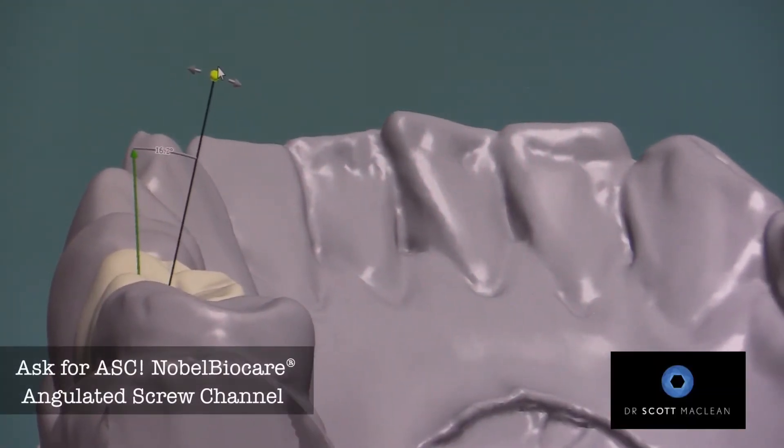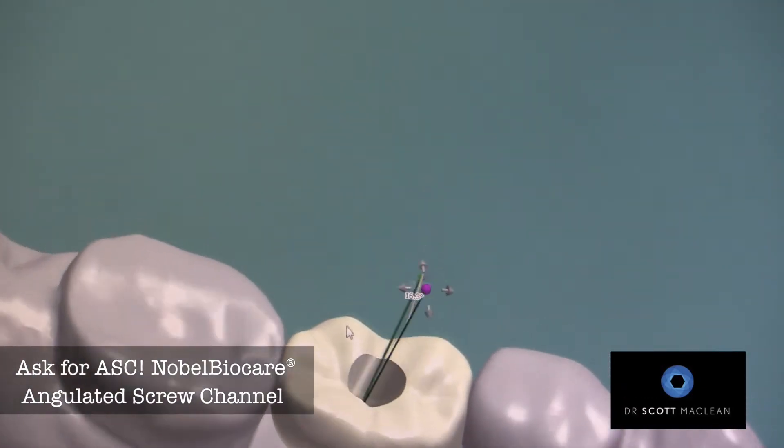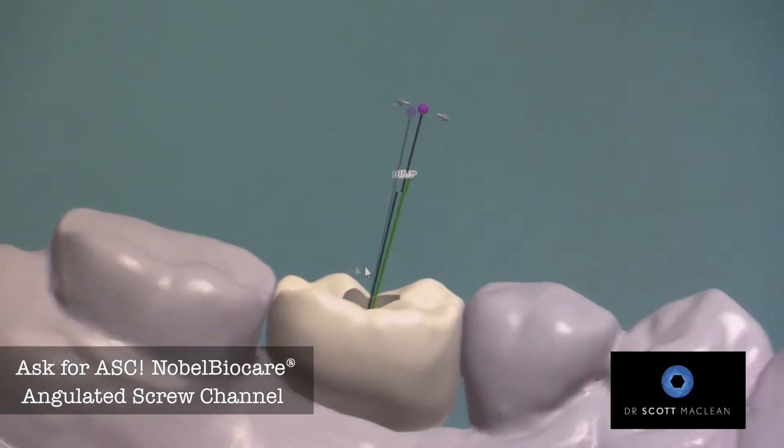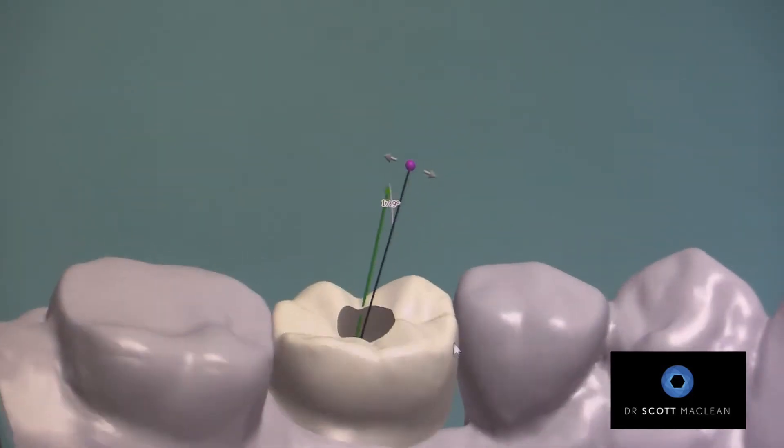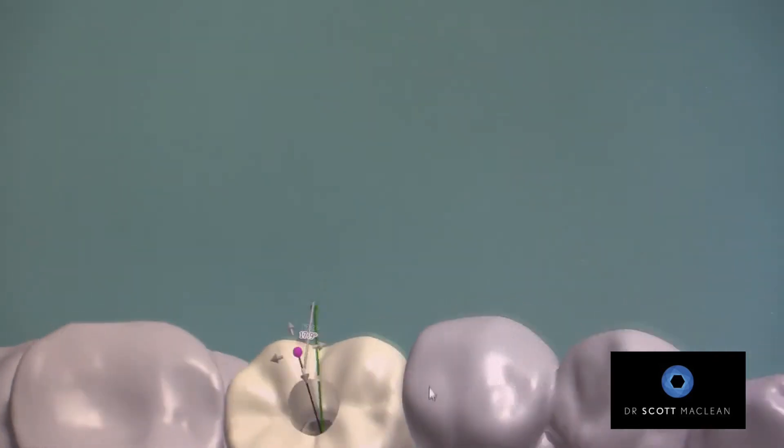So with the ASC or Angulated Screw Channel from Nobel BioCare, you can take the channel, tip it in the three-shape software. And then tip it back and create an angulated screw channel so that the channel is now going to be in the center of the crown.